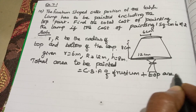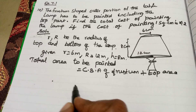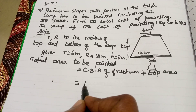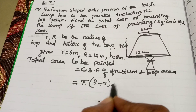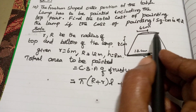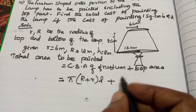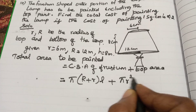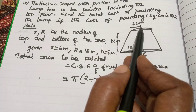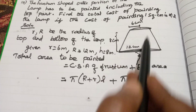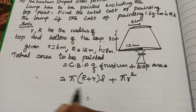Given: small r equals 6 cm, capital R equals 12 cm, height equals 8 cm. Total area to be painted equals CSA of frustum plus top area. CSA of frustum formula is pi into R plus r into L. Top area, being circular, uses pi r square. Since the top radius is smaller r, we use pi small r square. First, L needs to be found.